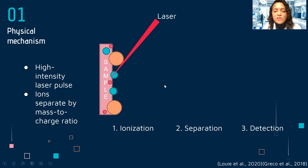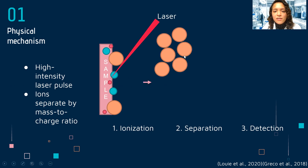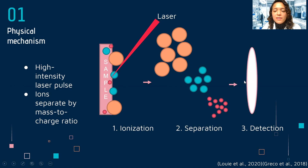First we have the laser, we are going to start liberating the sample, and in this gas phase, as you see, they are being separated by mass to charge ratio, and then they'll be detected.